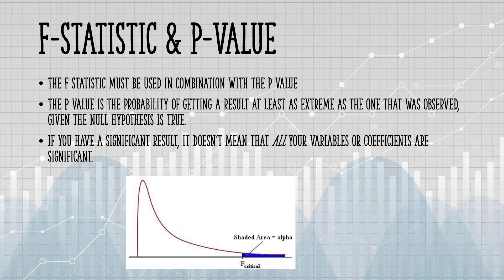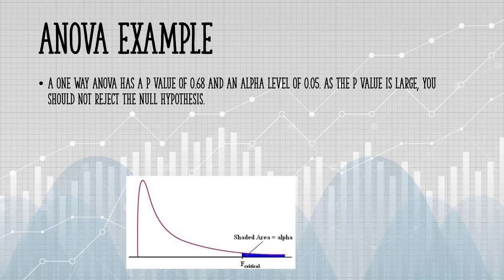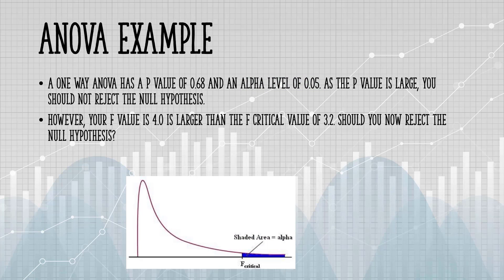If you have a significant result, it doesn't mean that all your variables or coefficients are significant. Let's say you're running a one-way ANOVA and you get a P-value of 0.68 with an alpha level of 0.05. As the P-value is large, you should not reject the null hypothesis.